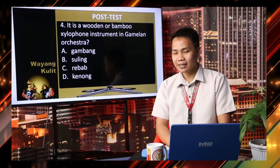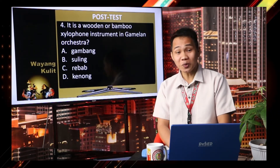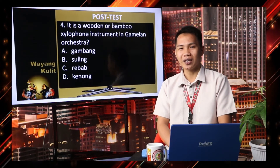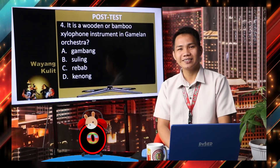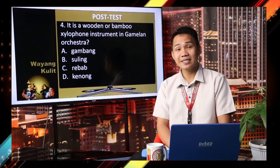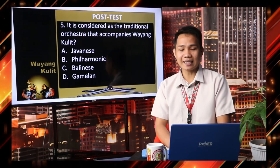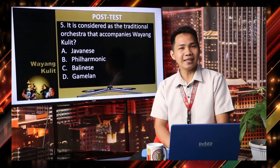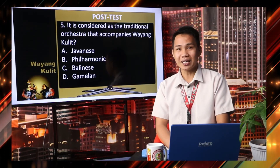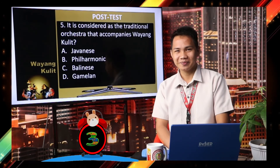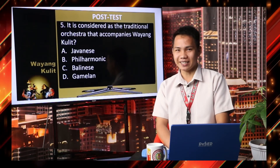Number four: it is a wooden or bamboo xylophone instrument in the gamelan orchestra. Letter A, Gambang. Letter B, Suling. Letter C, Rebob. Letter D, Kano. Your five seconds starts now. Time is up. The correct answer is Letter A, Gambang. Last item: it is considered as the traditional orchestra that accompanies Wayang Kulit. Letter A, Japanese. Letter B, Philharmonic. Letter C, Balinese. Letter D, Gamelan. Your five seconds starts now. The correct answer is Letter D, Gamelan.